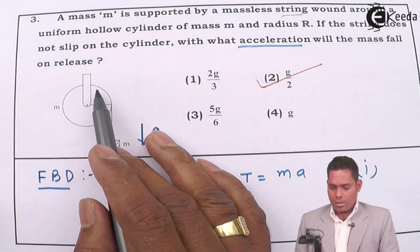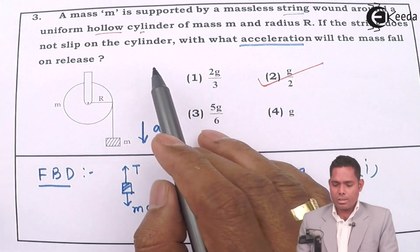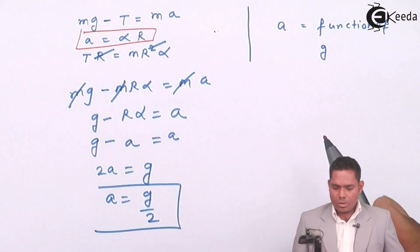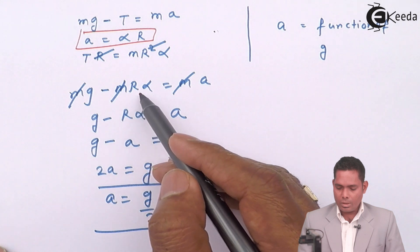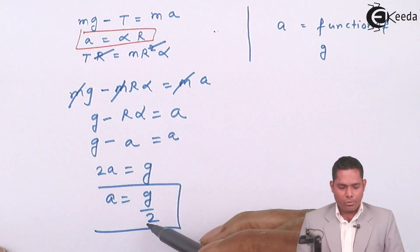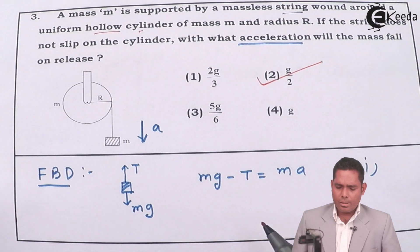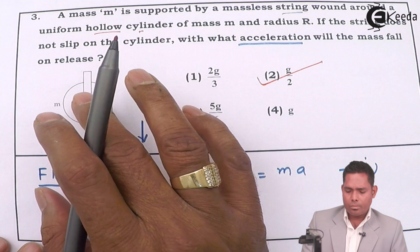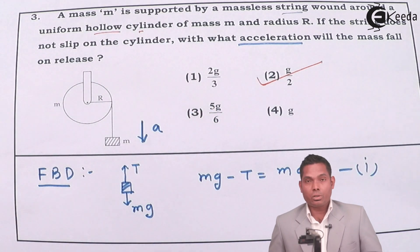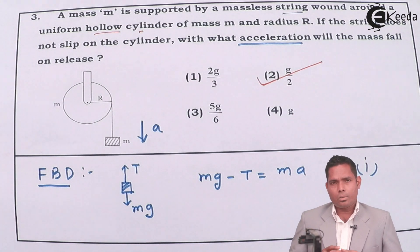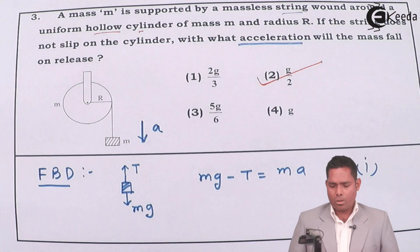Keep in mind this is a hollow cylinder. If it were a solid cylinder, the moment of inertia would be MR squared by 2, and that would lead to a different result. So this question is essentially about writing the force equation, the torque equation, and applying the no-slipping condition. Using these three conditions, you solve the equations. Thank you.